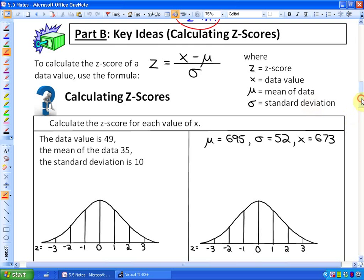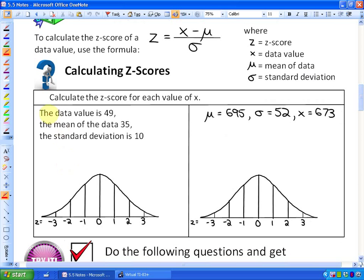So here's a couple of examples for you. If we had, for example, a data value of 49, a mean of 35, and a standard deviation of 10, I would like to know the z-score for 49. So to apply these two numbers, let's apply the mean of 35 to this particular normal distribution.